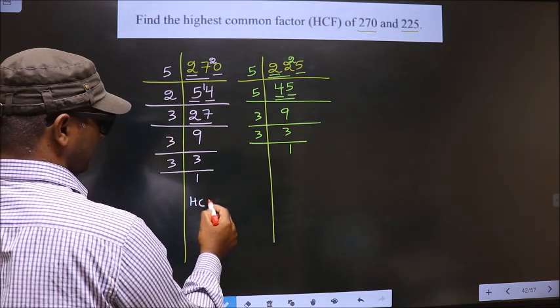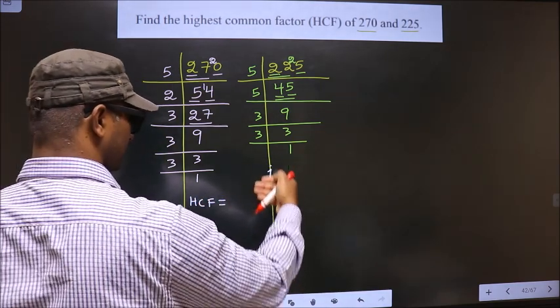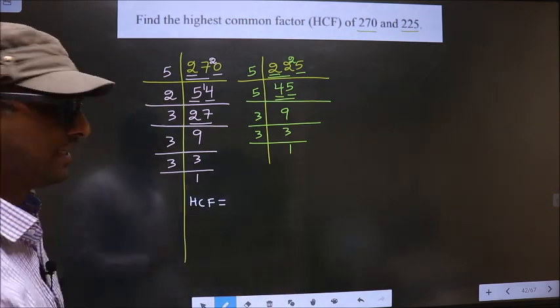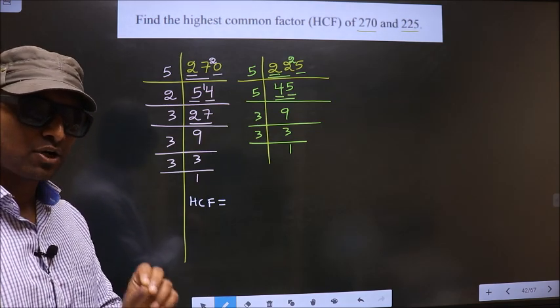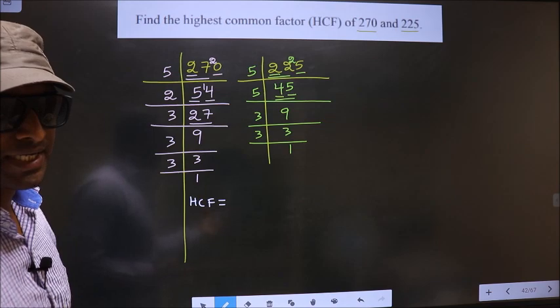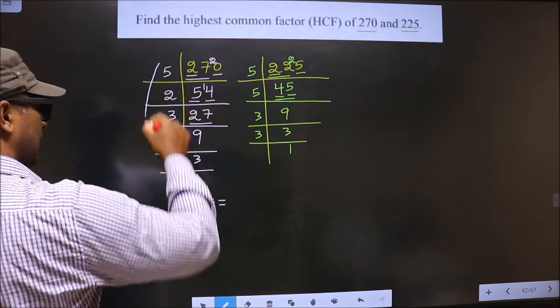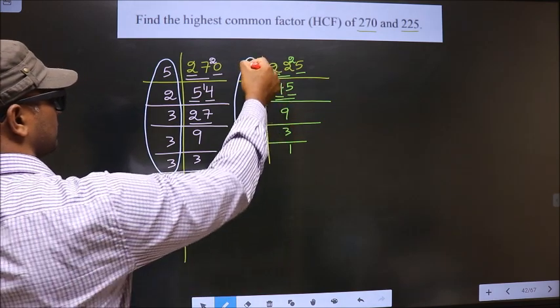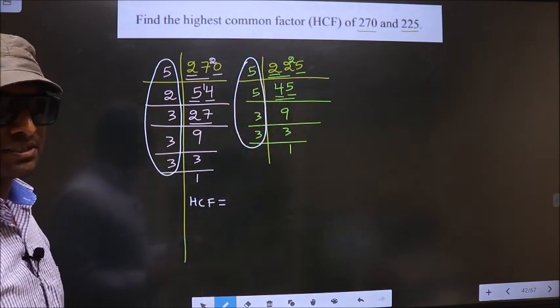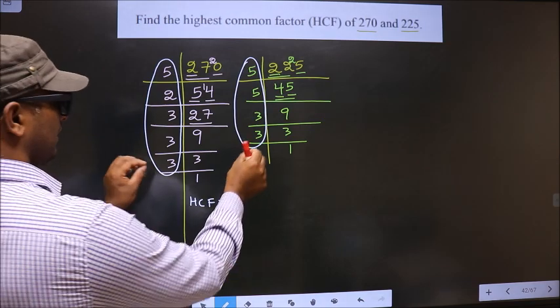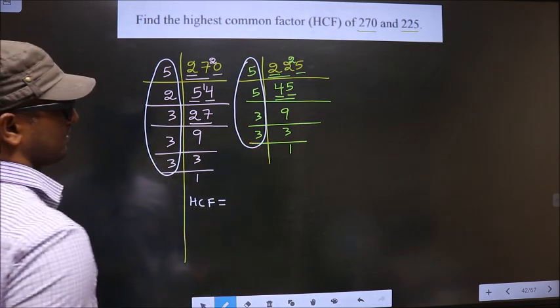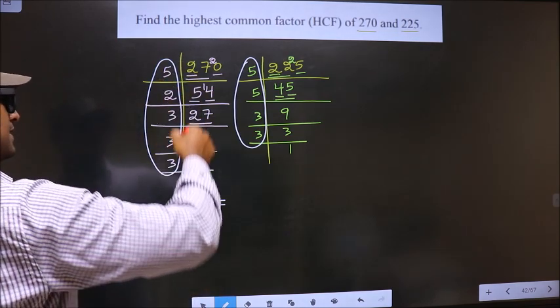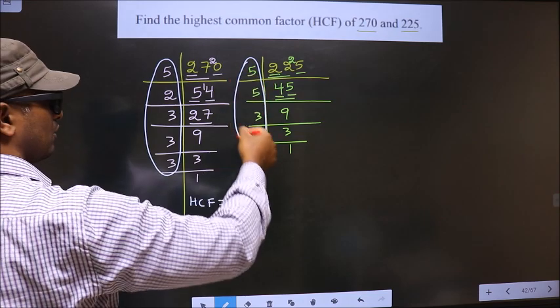So now our HCF is the product of numbers that are present here and also here. So now we should find the numbers that are present in these 2 places.